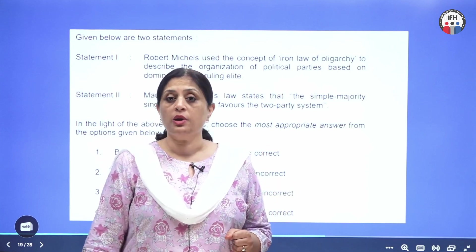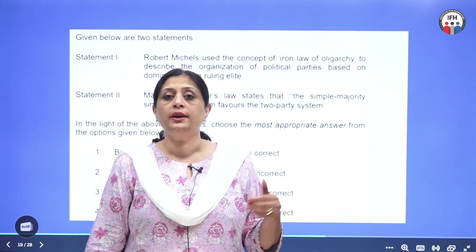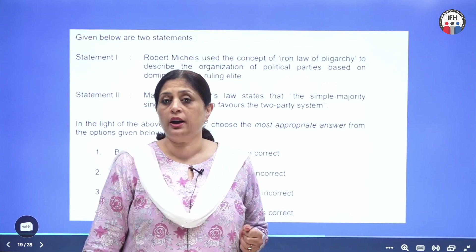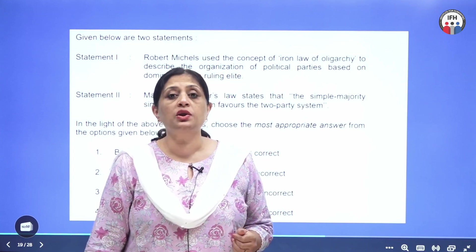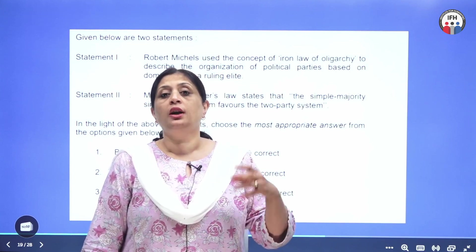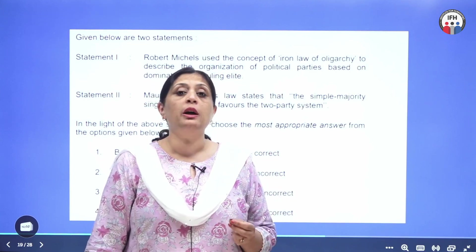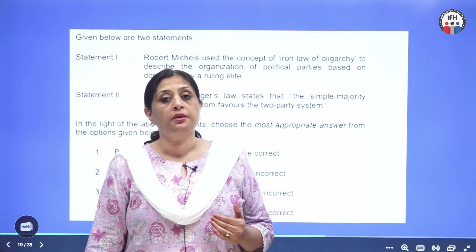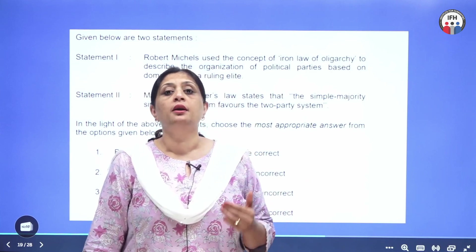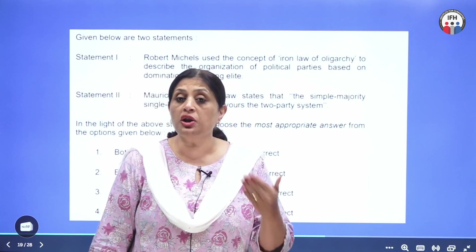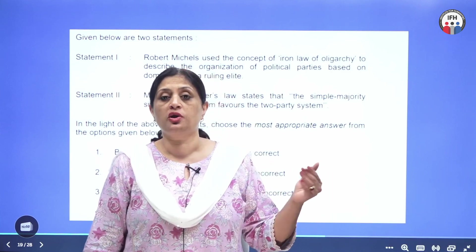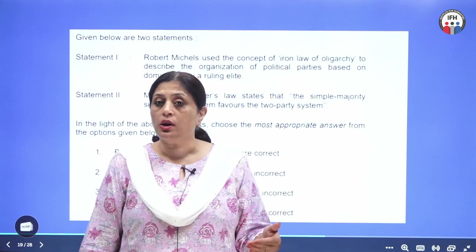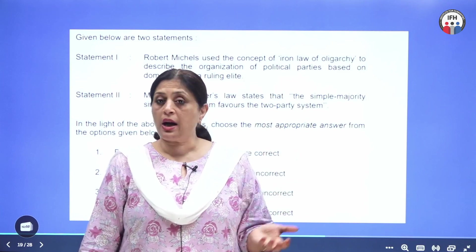Duverger is famous for providing the classification of political parties based on the behavioral approach. He classifies parties into mass parties and scattered parties, and discusses the internal organization of parties — he talks about cell, militia, caucus, and branch.